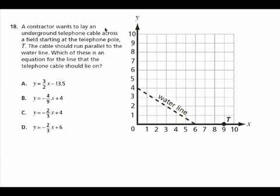A contractor wants to lay an underground telephone cable across a field starting at the telephone pole T. The cable should run parallel to the water line. Which of these is an equation for the line that the telephone cable should lie on?